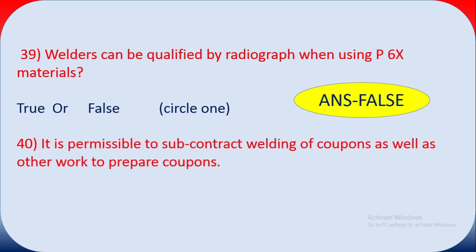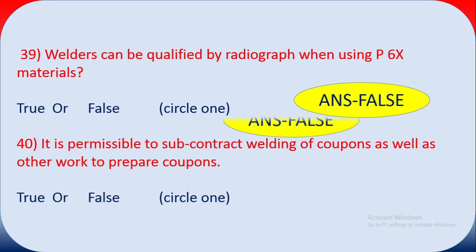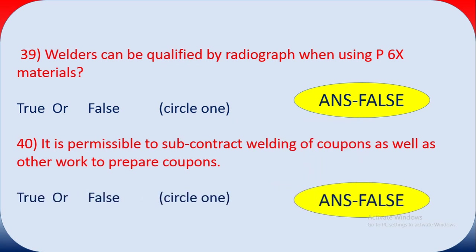Question forty: it is permissible to subcontract the welding of coupons as well as other work to prepare coupons — true or false? The answer is false. The responsible contractor must prepare the coupons and the building inspector must check them — no subcontracting of coupon preparation is allowed.